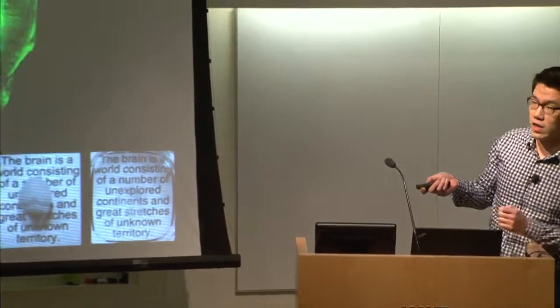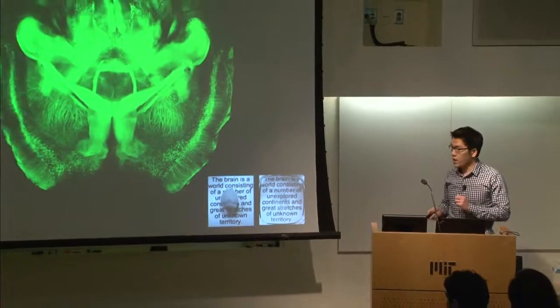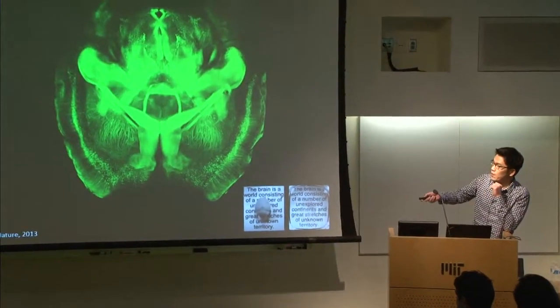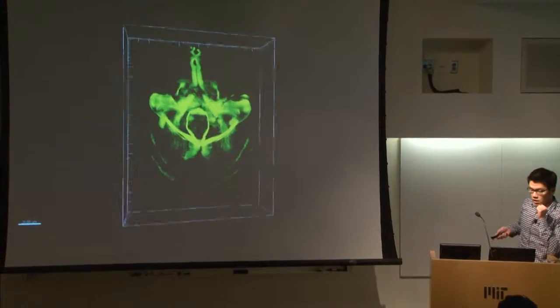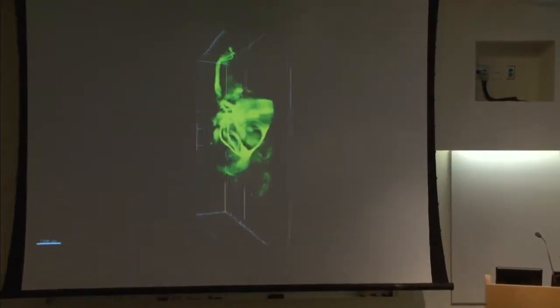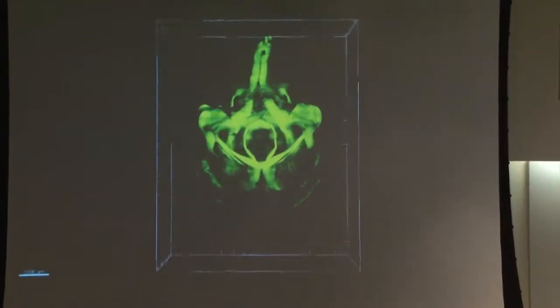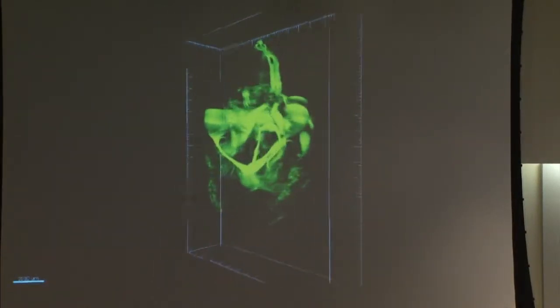CLARITY is a technology that transforms intact tissue into an optically transparent and macromolecular-permeable form while preserving all the structure and molecular information. Once a brain becomes transparent, we can image the brain without mechanical sectioning and visualize the distribution of neurons and their connectivity in intact tissue.